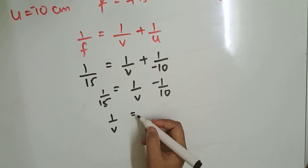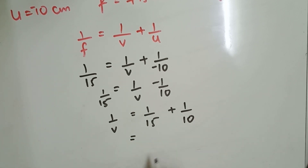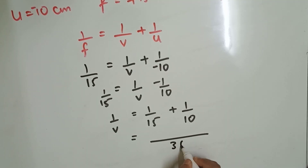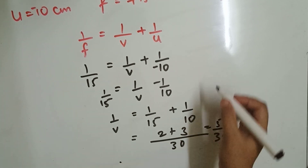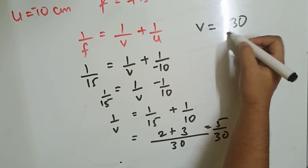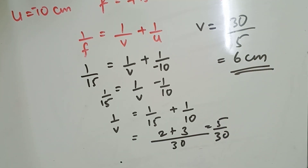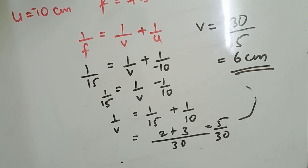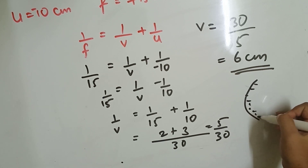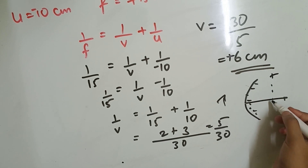Now apply the mirror formula: 1/f = 1/v + 1/u. Substituting: 1/15 = 1/v + (−1/10). Transposing: 1/v = 1/15 + 1/10. Taking LCM of 15 and 10, which is 30: 1/v = 2/30 + 3/30 = 5/30. Therefore v = 30/5 = 6 cm. A common mistake here is forgetting to take the reciprocal, so be careful.